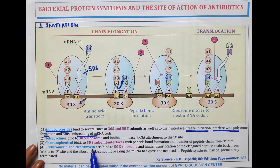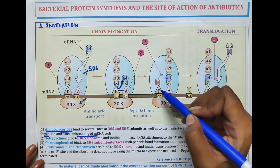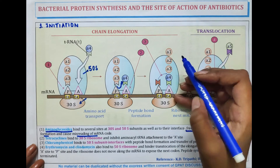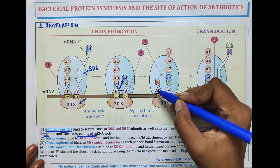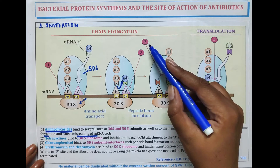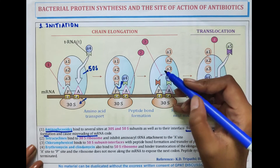Chloramphenicol binds to the 50S subunit interface and inhibits peptide bond formation and transfer of the peptide chain from the P site. When amino acids are transferred to the A site from the P site, chain elongation initiates. Chloramphenicol inhibits this chain elongation by binding with the 50S subunit interface.